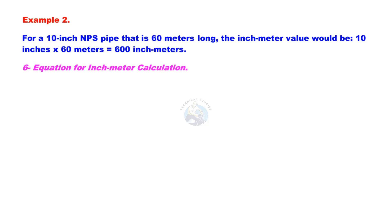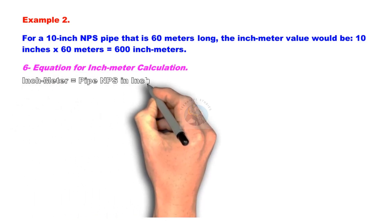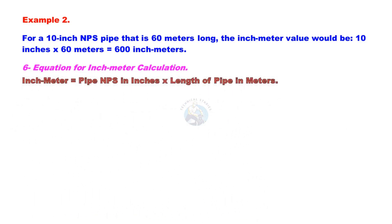Equation for inch-meter calculation: inch-meter equals pipe NPS in inches multiplied by length of pipe in meters.